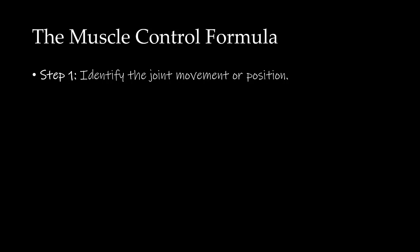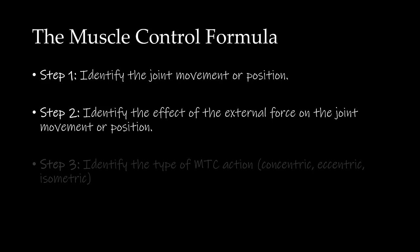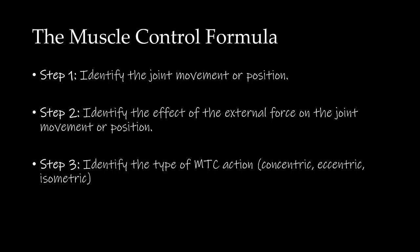Let's review what we did for this example. Step 1: we identified the joint movement as glenohumeral adduction. Step 2: we determined that the effect of the external force — in this case gravity — was to adduct the arm. Step 3: we noted that both the joint movement and the effect of the external force are in the same direction, and the movement is faster than that produced by the external force alone. Therefore, we conclude this is a concentric MTC action.